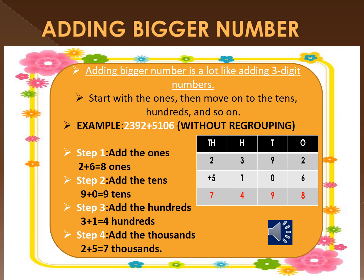Adding bigger numbers is a lot like adding three-digit numbers. Start with the ones, then move on to the tens, hundreds, and so on. For example, we are going to add 2,392 and 5,106 without regrouping. The first step is to add the ones: 2 plus 6 gives you 8 — so 8 ones.